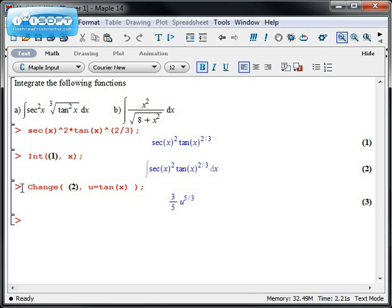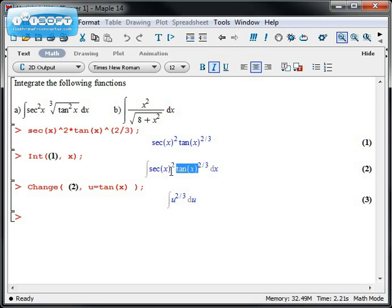Now if I retype this command change, line two, u equals tangent of x, then I can actually see what the substitution would be: that we should have u to the two-thirds, and then the sine squared dx should have been the du. So this is a nice way of checking that you're getting a substitution right.